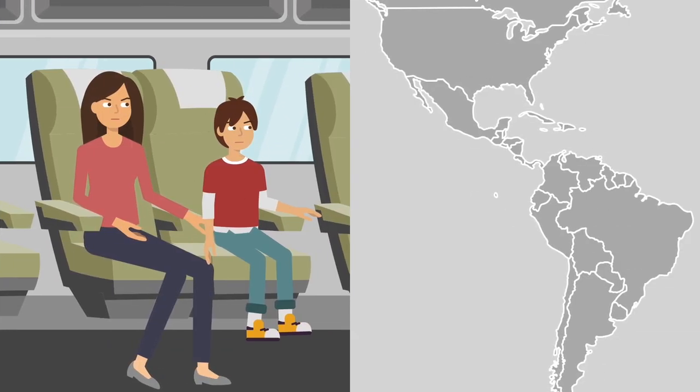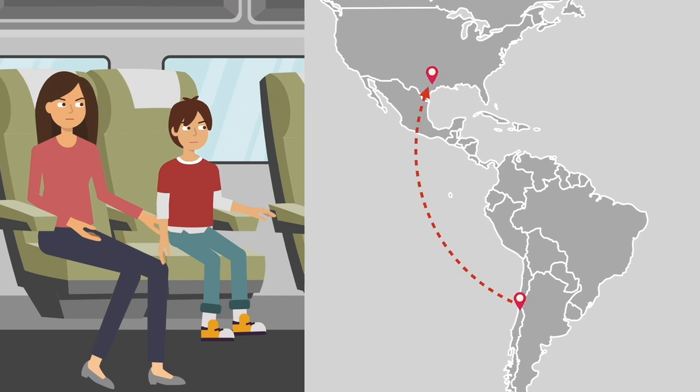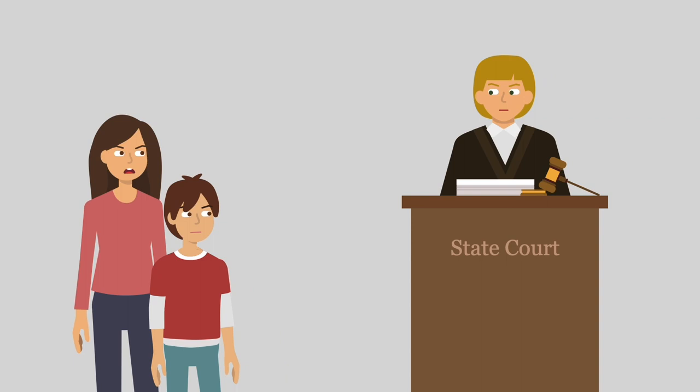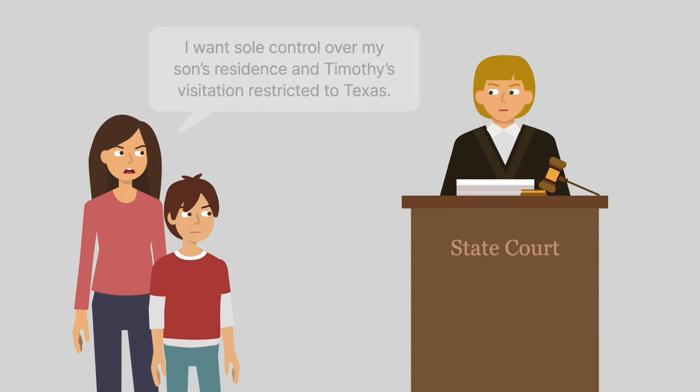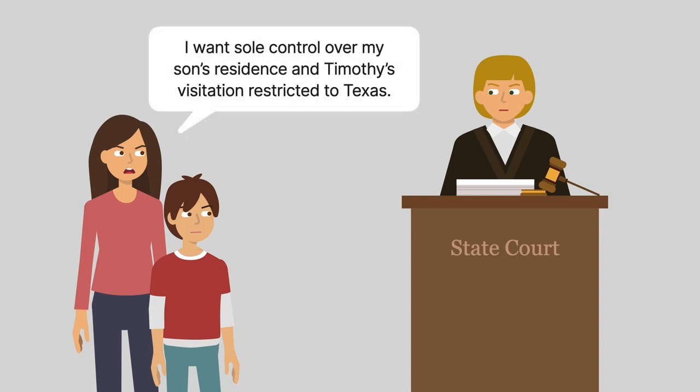While the Chilean proceedings were ongoing, however, Jacqueline relocated the son to Texas. Once there, she filed a state court suit seeking unilateral control over the son's place of residence and an order restricting Timothy to supervised visitation in Texas.